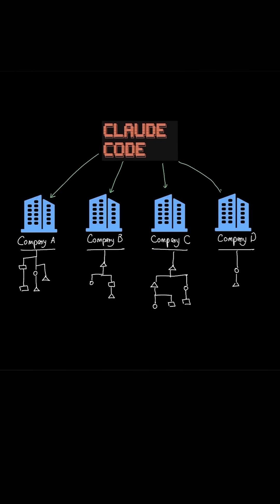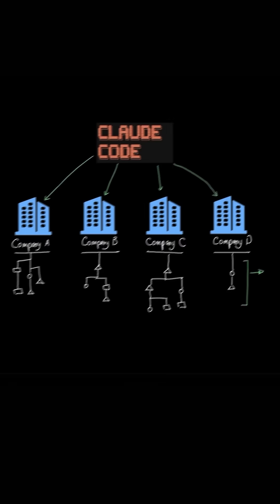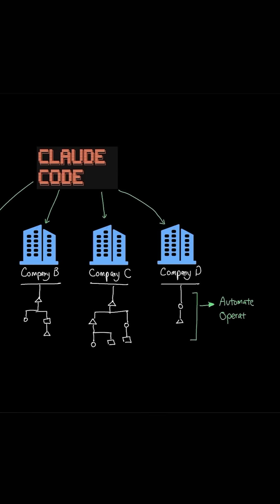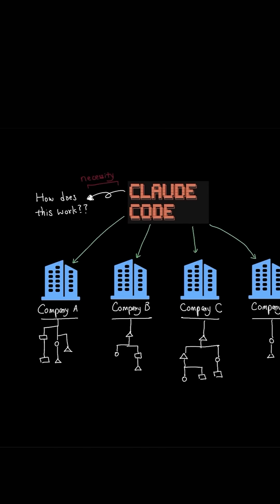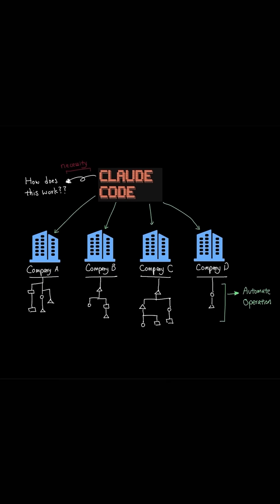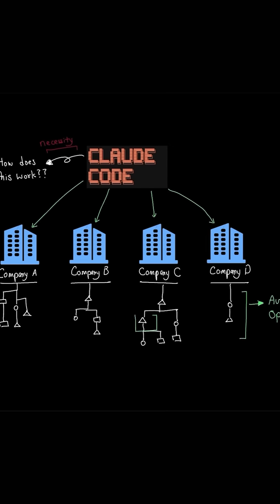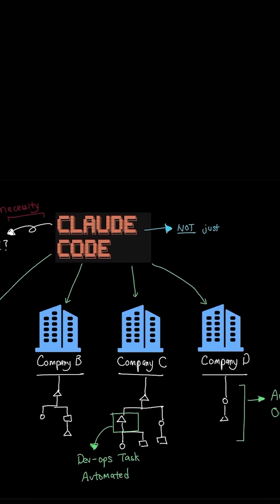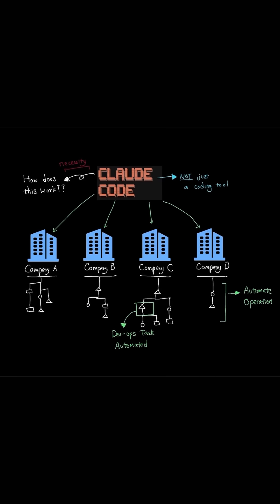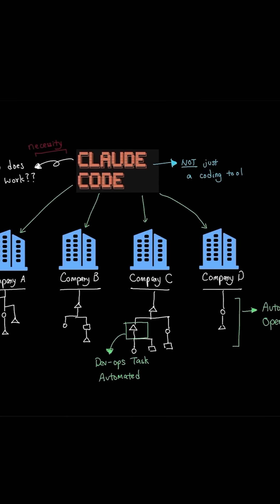CloudCode has been gaining so much momentum in how companies are using it to automate their operations, and it's starting to become a necessity in learning how to use CloudCode in the industry. For example, some companies have used CloudCode to automate their DevOps tasks. And all this is possible because CloudCode isn't just a code editing tool — the scope is much greater than that due to Anthropic's vision in how CloudCode can be used.